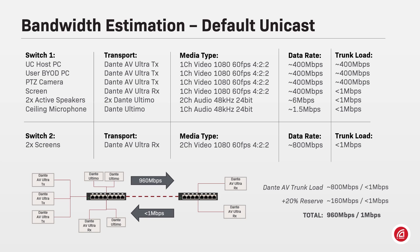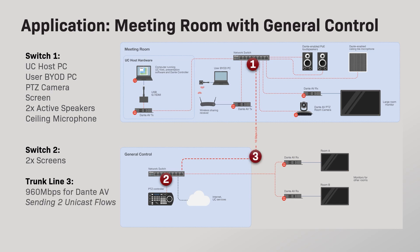In the opposite direction of the trunk line, from switch 2 back to switch 1, we don't need to consider more than just a few megabits per second for the clocking and housekeeping packets. So in this case, with a trunk line of 960 megabits per second already including 20% reserve bandwidth, we could operate the system in a unicast method of media distribution. As unicast only starts sending media upon receiver subscription, if none of the screens on switch 2 are subscribed, the trunk line won't carry the estimated data. As soon as the Dante operator clicks on the intersection in Dante controller, the estimated data will then start flowing through the trunk lines.